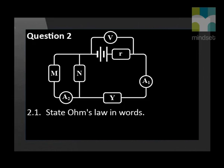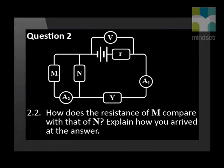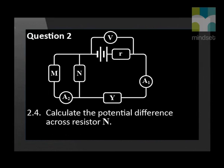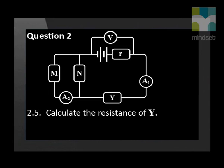State Ohm's law in words. How does the resistance of M compare with that of N? Explain how you arrived at the answer. If the EMF of the battery is 17 volts, calculate the internal resistance of the battery. Calculate the potential difference across resistor N. Calculate the resistance of Y.